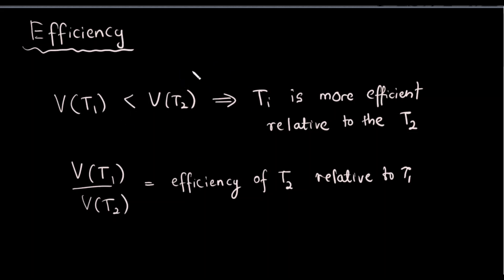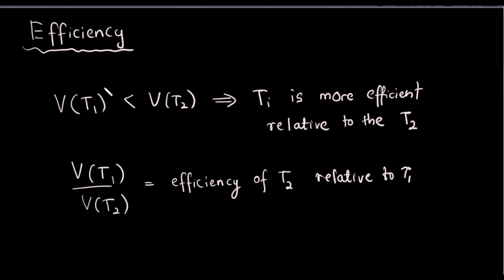What I am going to call is Efficiency. I am going to call Point Estimators. Efficiency is not simply efficiency — we will call Estimators and we will call Comparison. We will call the variance and we will call Efficiency. So, we are going to call Efficiency.